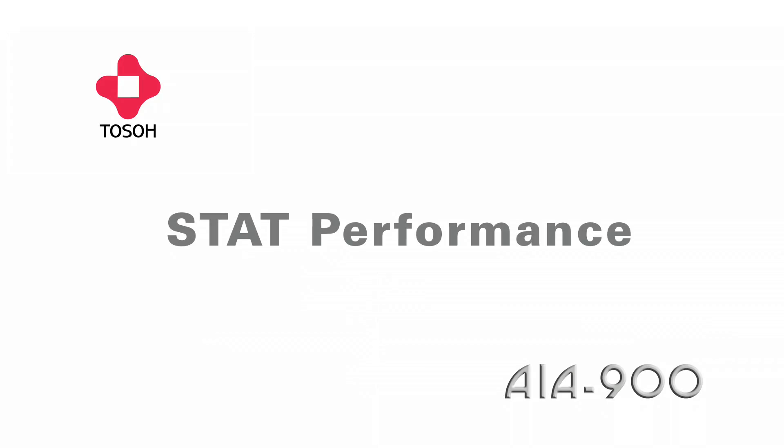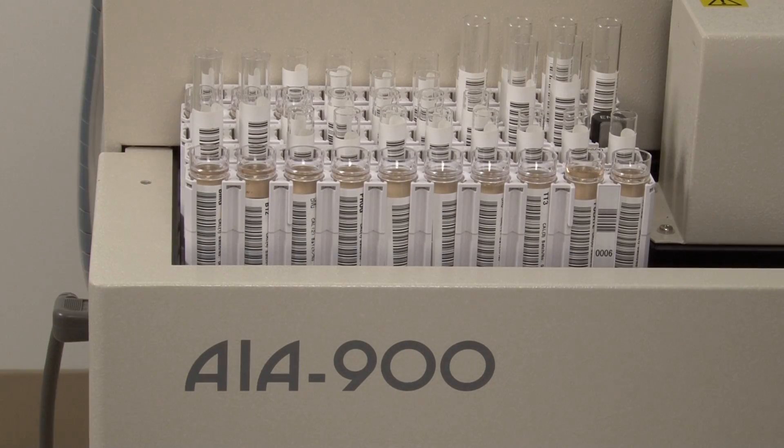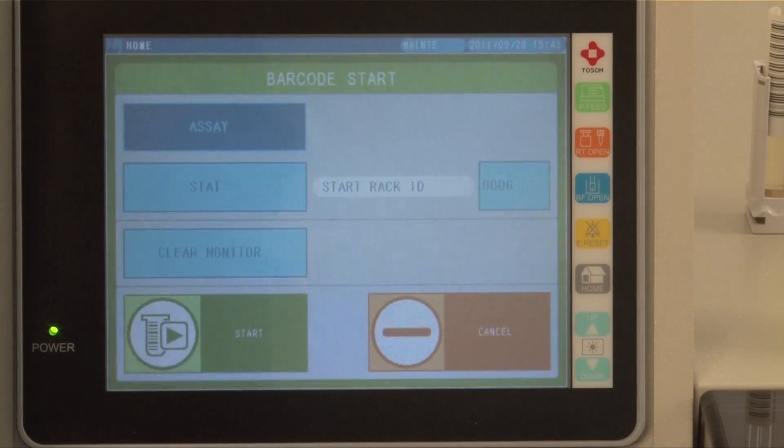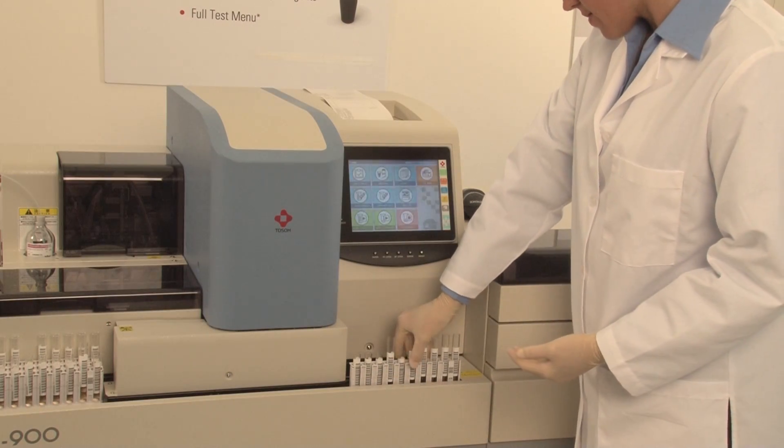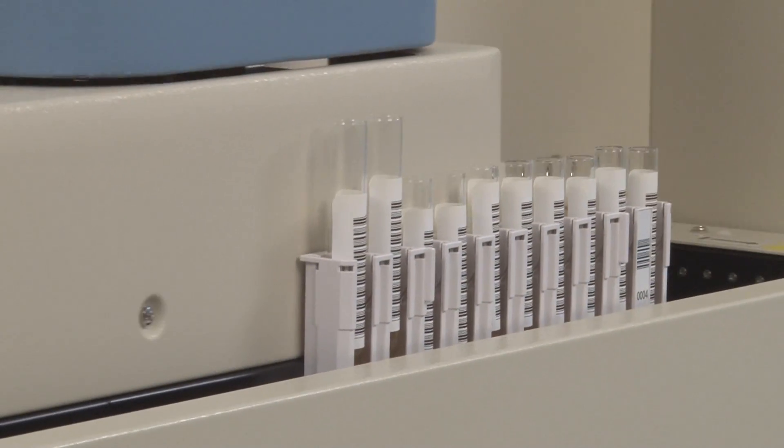Stat performance. Multiple stat processing is available on the AIA 900. To run a stat test, the operator simply chooses the priority rack option and places the sample rack on the instrument.